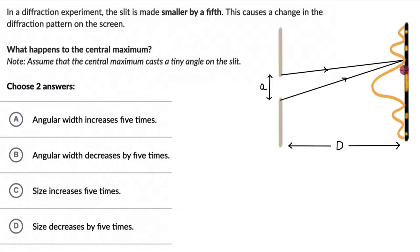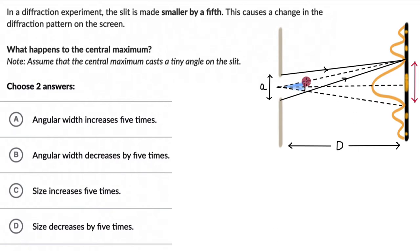We can think about size first — it could just be the width of the central maximum, this entire distance right here. The angular width is the angle that the central maximum makes on the slit — wherever the central maximum is ending, whatever angle it makes on the slit, that would be the angular width. This complete angle is the angular width of the central maximum. Half the central maximum is on each side, so these two angles are the same.